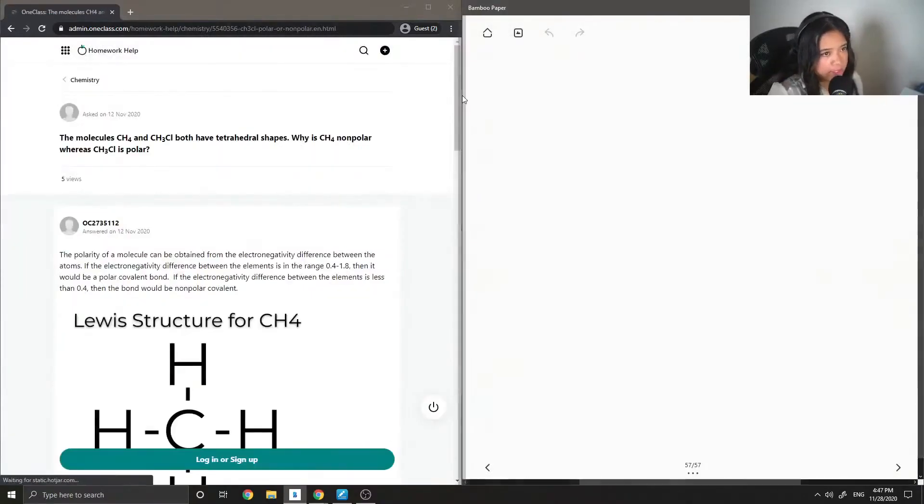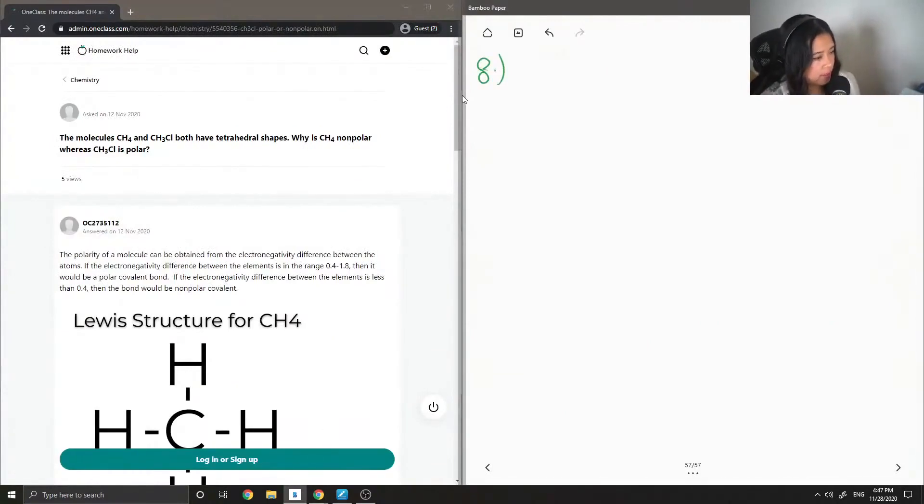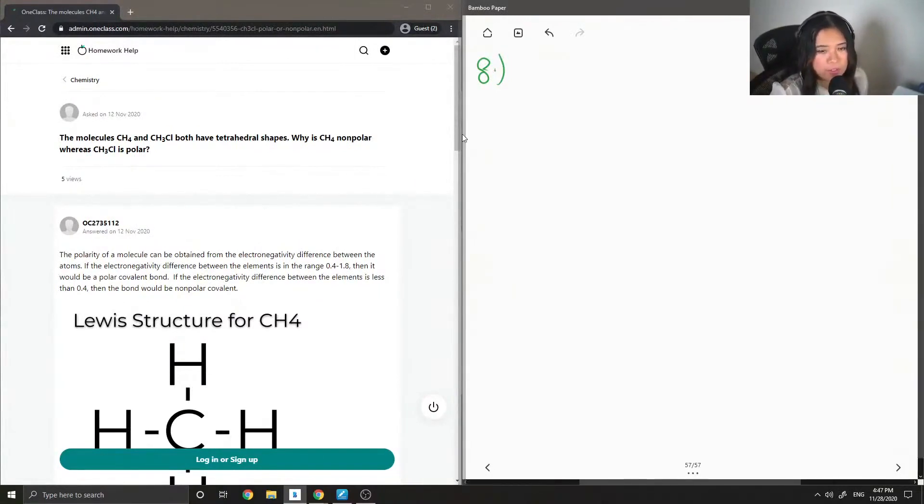Okay, so on to question eight. The molecules CH4 and CH3Cl have tetrahedral shapes. Why is one non-polar and the other polar? Let's write down both structures.